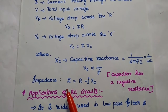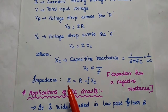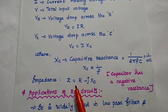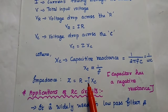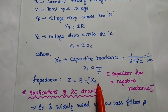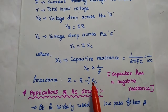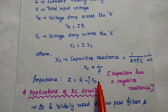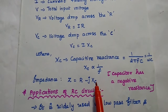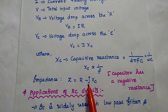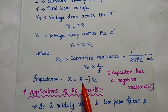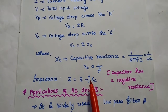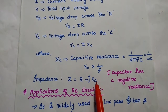Next, the impedance Z is equal to R minus jXc. The capacitor has negative reactance for the current flowing through it, so we write R minus jXc.